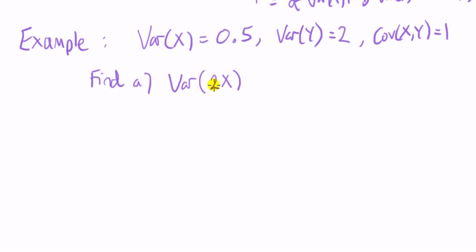Now, solution, variance of two times x. So we're looking at a variance of a constant times a random variable. The rule says that the constant comes out and is squared, two squared times the variance of x. Substitute numbers in, two squared is four times the variance of x which is a half, answer is two.